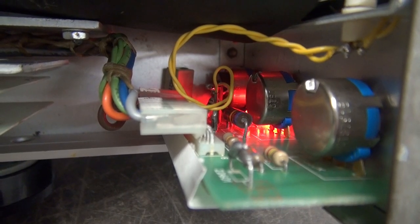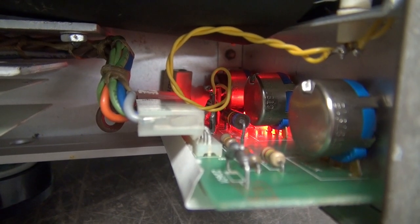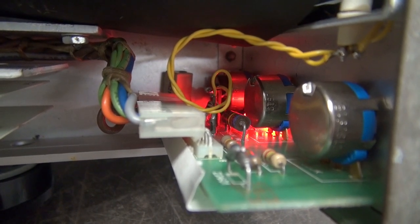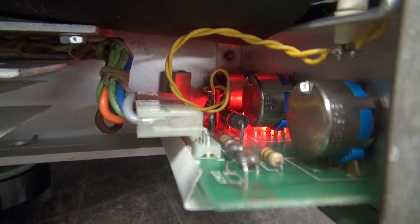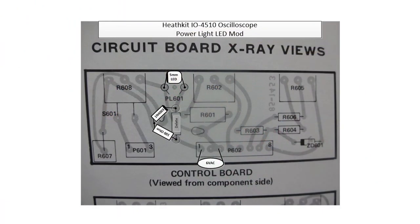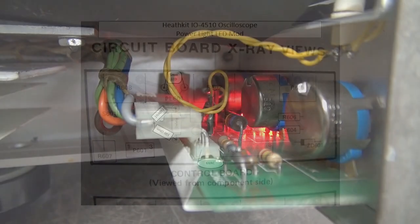I hope you like this nifty little modification for the Heathkit scope. You don't have to fool with that incandescent bulb anymore. Here is the actual circuit—I'll post it. You can see what you do is add the resistor, the diode, and your LED, put it back in, and never think about it again.